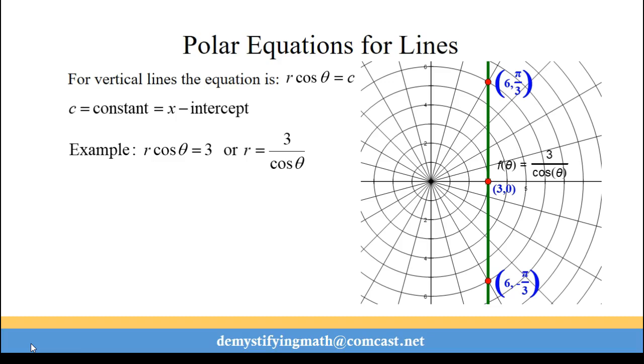And you can see those points lined up vertically. So we have points at 3, 0, which is our x-intercept, 6 at pi over 3, and 6 at negative pi over 3. Thank you for watching Demystifying Math.